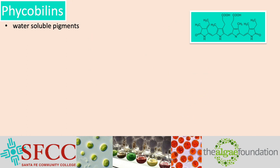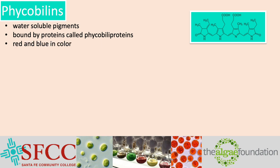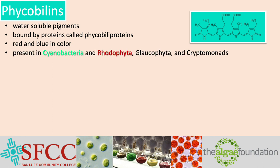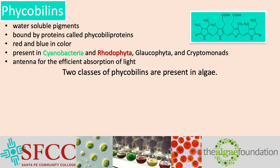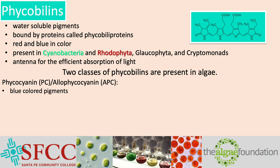Phycobiliins are water-soluble pigments covalently bound by proteins called phycobiliproteins. Phycobiliproteins are red and blue in color, and are present in the cyanobacteria, red algae, glaucophyta, and cryptomonads. Phycobiliproteins function as antennae for efficient light harvesting. There are two classes of phycobiliins present in algae: phycocyanin and allophycocyanin are made of phycobiliins bound to slightly different proteins. These are the blue-colored pigments, present in the red algae and cyanobacteria.